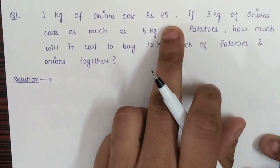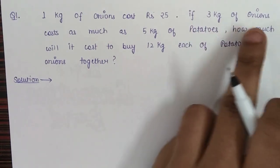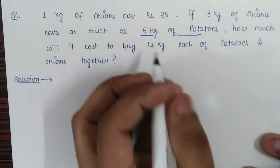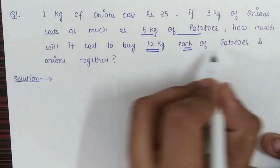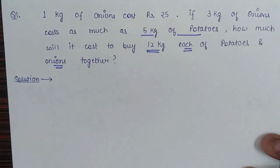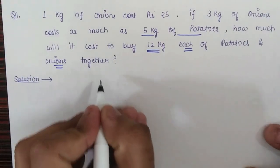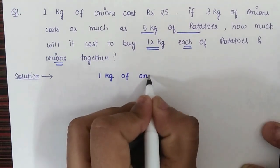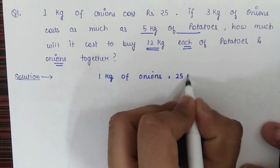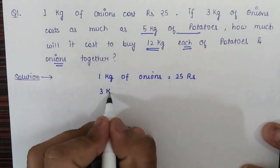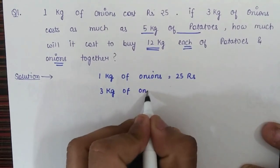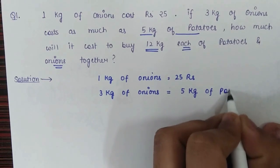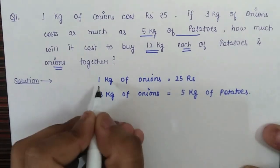This is the first question. It states that one kilogram of onions costs 25 rupees. If three kilograms of onions cost as much as five kilograms of potato, how much will it cost to buy 12 kilograms each of potato and onions together? We are given that one kilogram of onions is 25 rupees, and three kilograms of onions is equal to five kilograms of potatoes.